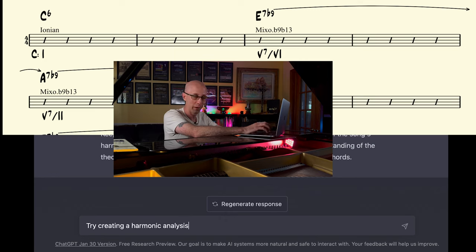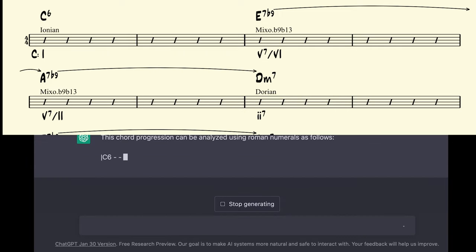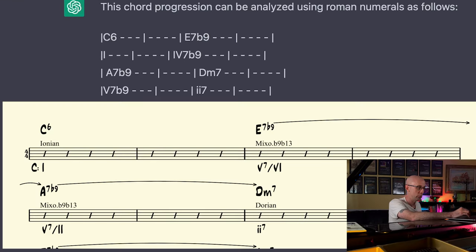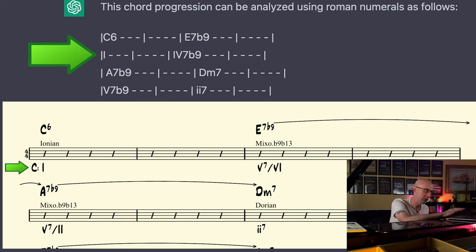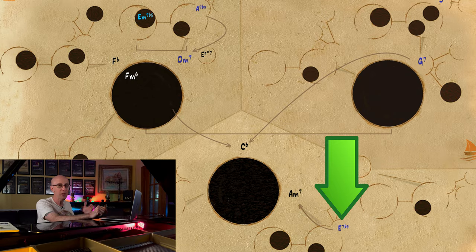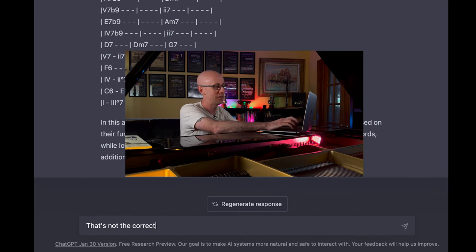Try creating a harmonic analysis of the following progression. This chord progression can be analyzed using Roman numerals as follows. Okay, so it's showing me line by line. C6 is the 1 — that's pretty good. E7b9 is labeled as the 4 7 flat 9 — not really. E7b9 is actually the 5 of 6. It could have at least said it was the 3 7 chord or something like that. That's not the correct analysis.